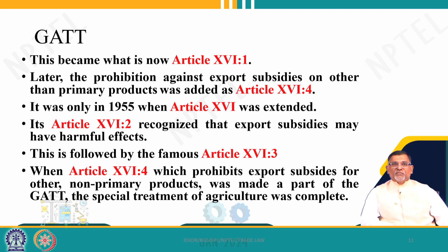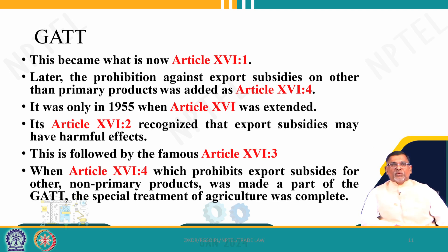Article 16.3 and 16.4 deal with provisions other than non-primary products and special treatment. You can see Articles 16.1, 16.2, 16.3, and 16.4. Many provisions were included, but all these provisions provide certain restrictions or controls which were supported for agriculture products. Certain provisions essentially stopped the free rate on this particular issue. The GATT in general has completely banned quantitative restrictions under Article 11, but in agriculture they are banned only under certain conditions.